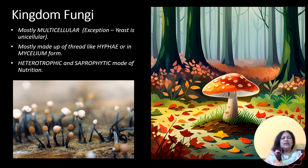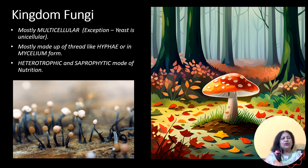Their mode of nutrition is heterotropic, usually lacking chlorophyll. That's why they cannot carry on with photosynthesis. The cell walls are made up of chitine. Most of them are saprophytes as seen in mushroom, or parasites as in the case of microsporium.